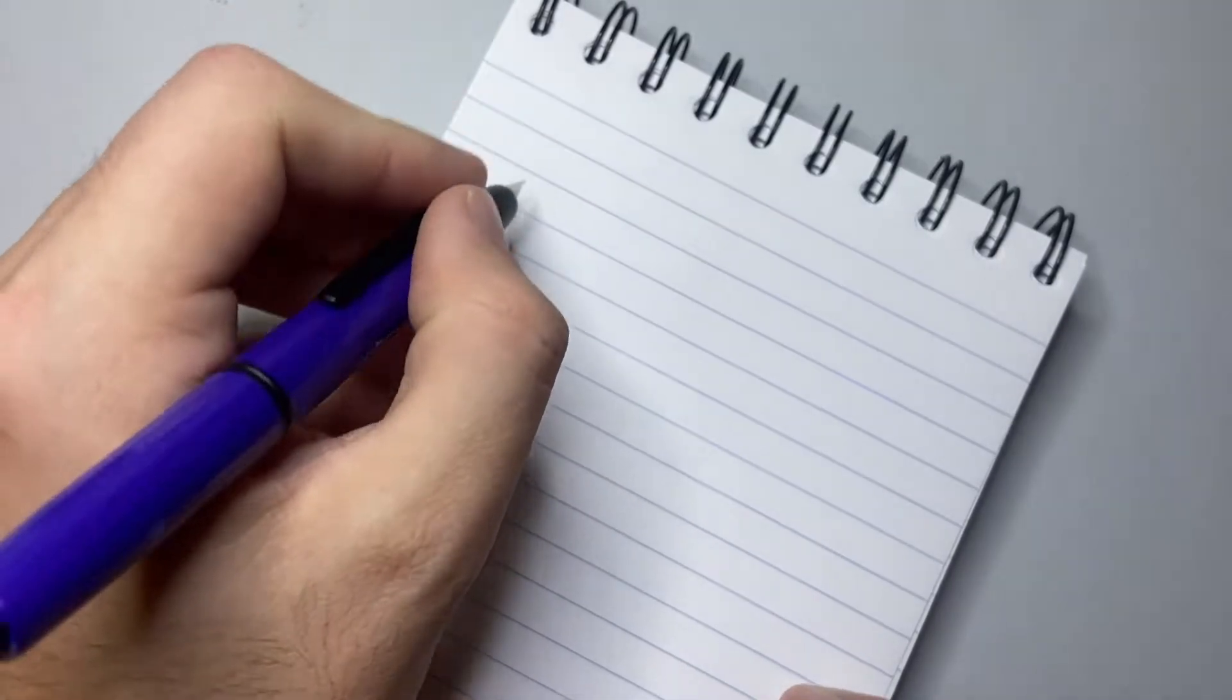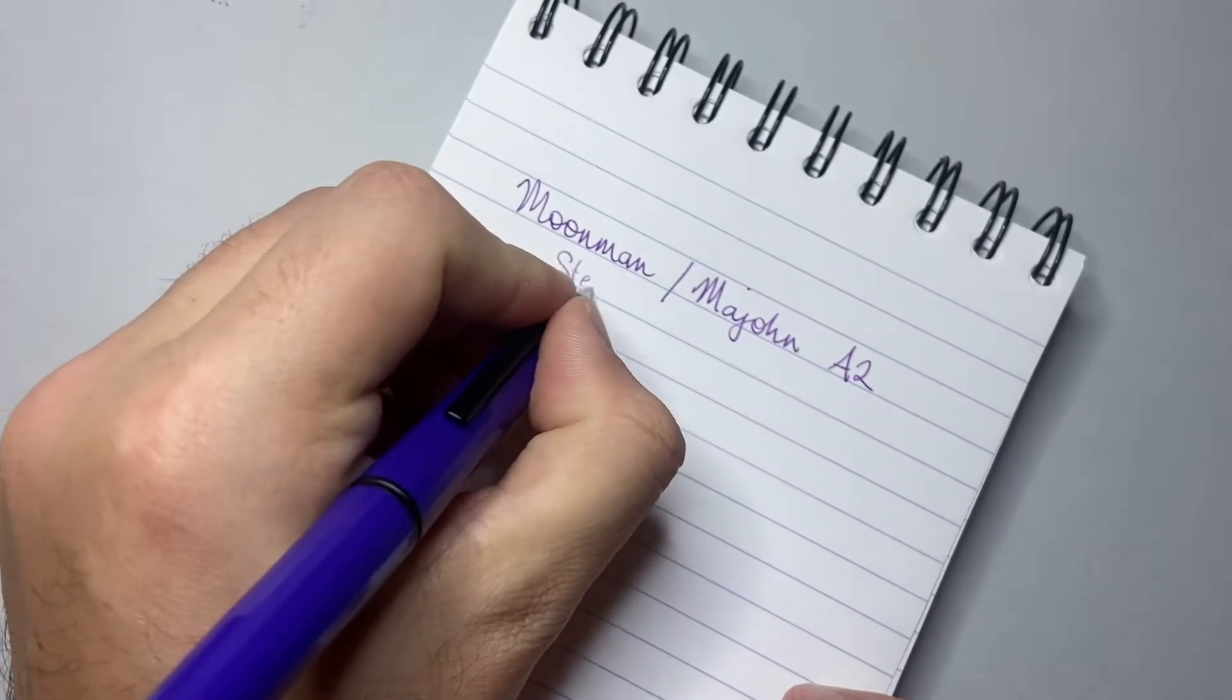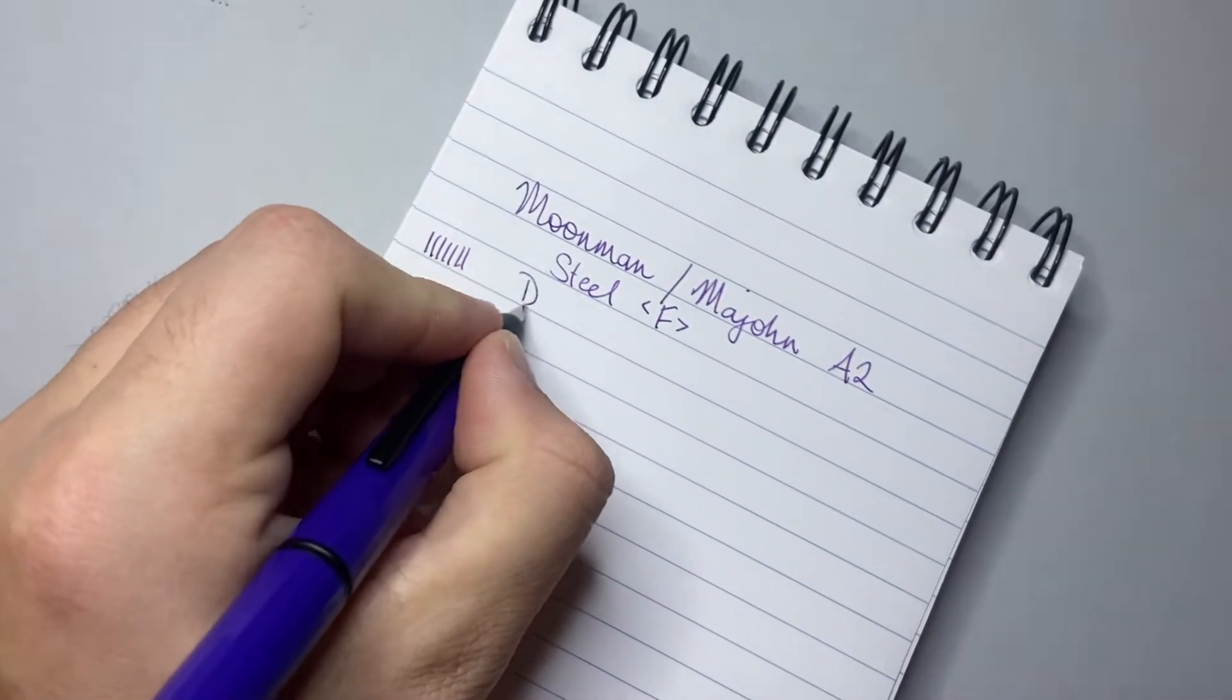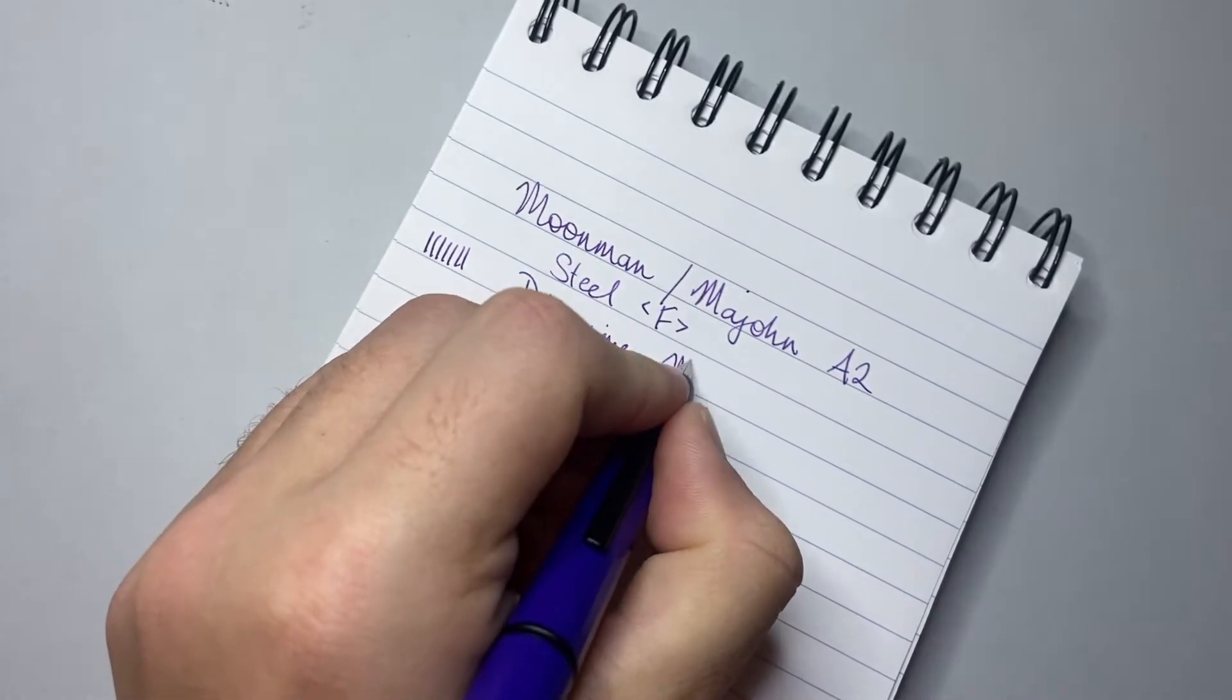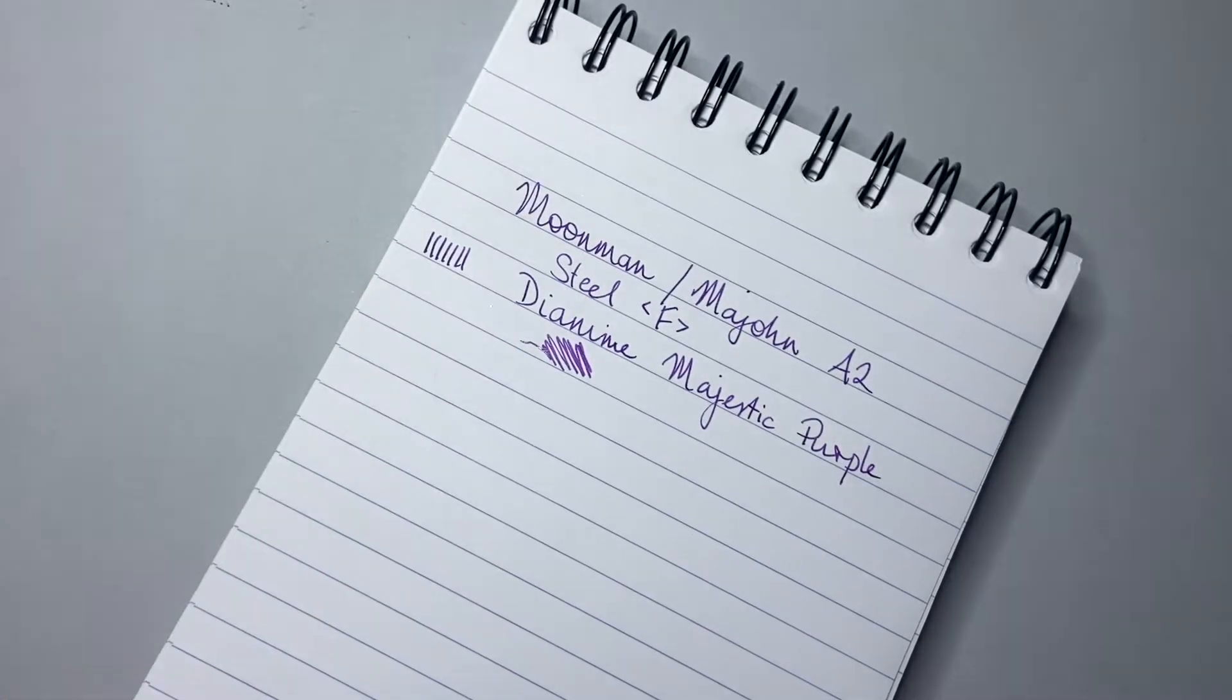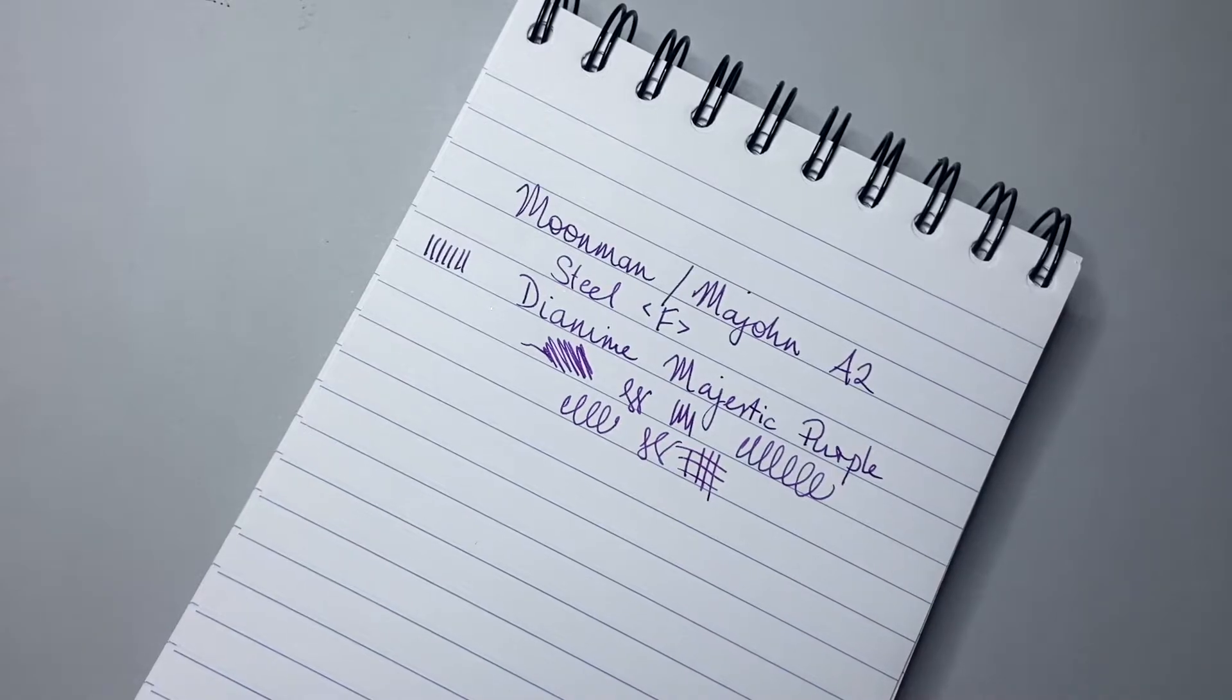So I'm going to start the writing sample today with the Moonman Mahjong A2 with a steel fine nib. What I'm going to do is I'm just going to do a couple of lines like this on the side because I'll line those up with the Pilot as well. The ink in this one is Diamine Majestic Purple, an ink I enjoy and a pen I enjoy it in. It writes smooth. It's not super wet but it writes very smoothly and it has a very fine line.